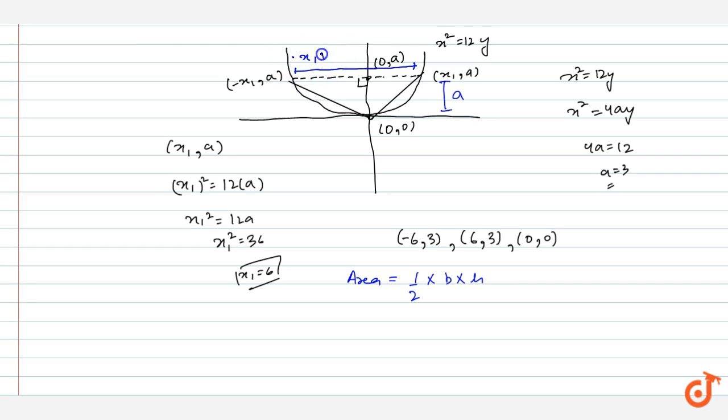Putting the values: half times base, where x₁ is 6 so 2x₁ will be 12, times height a which is 3. We get 18 square units. Therefore the area of the triangle required is 18 square units.